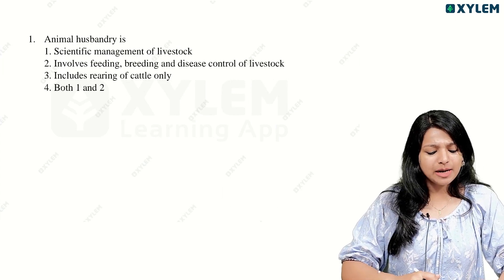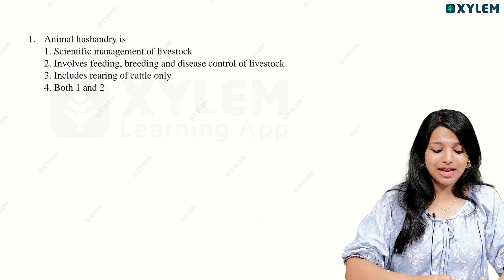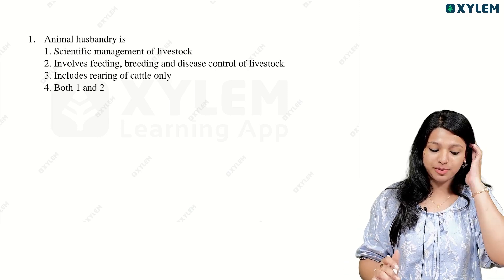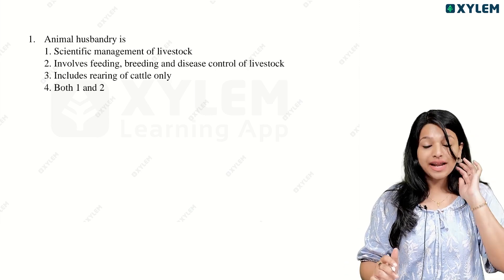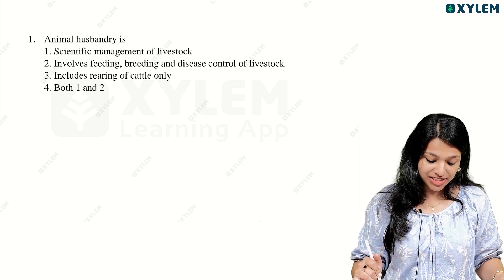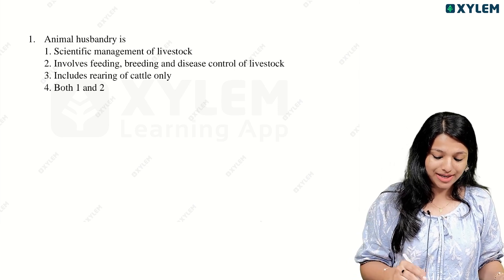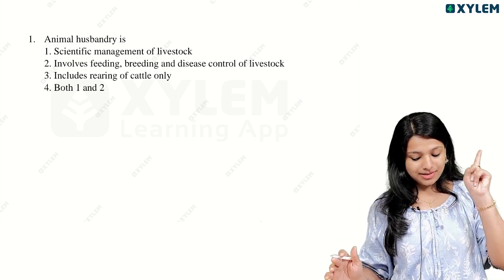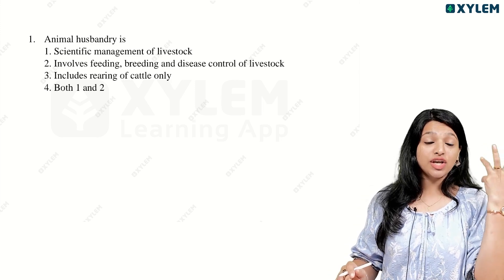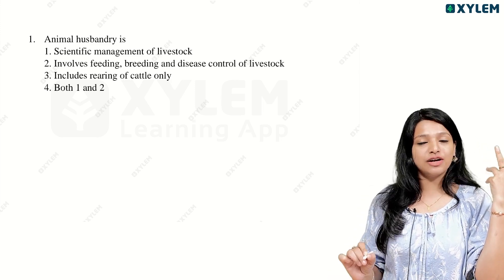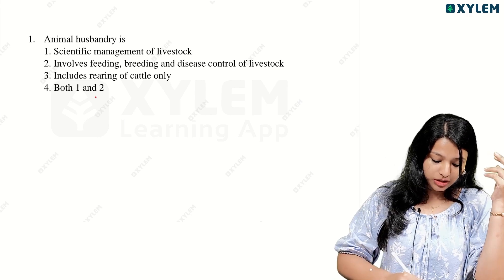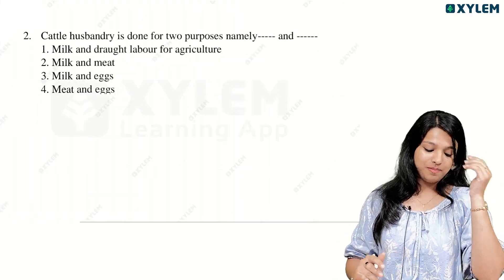Animal husbandry. What is animal husbandry? What is the scientific management of livestock? It involves feeding, breeding and disease control of livestock. In other words, the rearing of cattle is only options 1 and 2. We do not have just the scientific management of livestock alone — that is not a good answer. Feeding, breeding and disease control of livestock — both 1 and 2 is the correct answer.